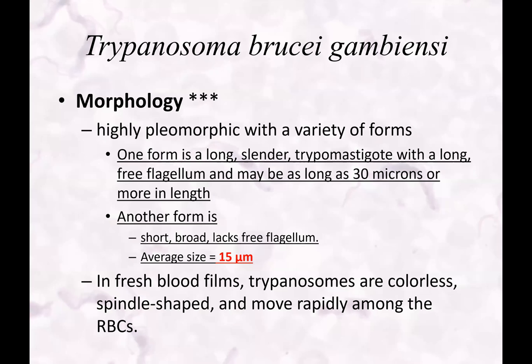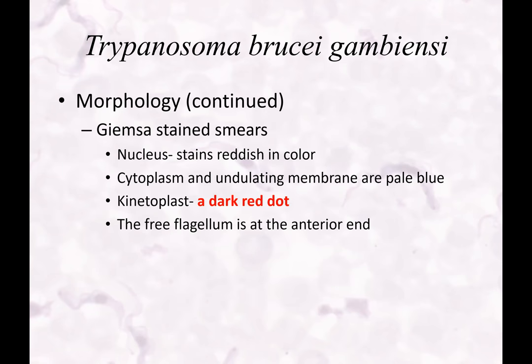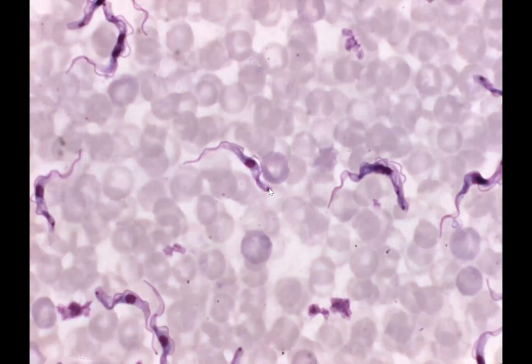Trypanosoma brucei gambiense is highly pleomorphic — one form is long, slender with a long free flagellum, and another form is short, broad, and lacks the free flagellum — about half the size. In fresh blood smears, the trypanosomes are colorless and move rapidly among red blood cells, so we stain them. With Giemsa stain: nucleus stains reddish, cytoplasm and undulating membrane pale blue, the kinetoplast is a dark red dot, and the free flagellum is at the anterior end.